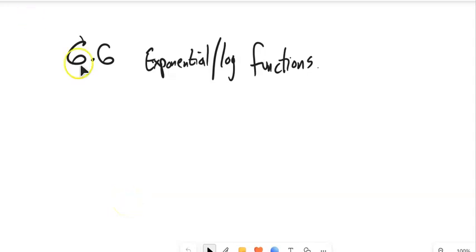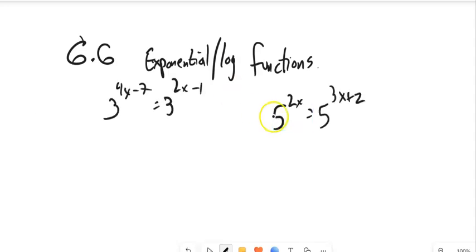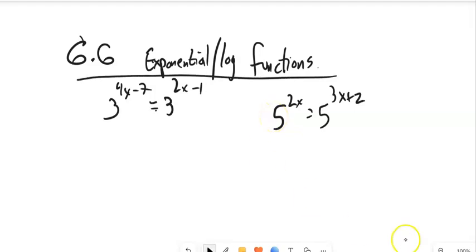In Math 99, section 6.6, we're looking at exponential and log functions — specifically solving them. I have a couple of equations here to solve, and notice they both have an exponential exponent element, like 3 to something equals 3 to something else, or 5 to something equals 5 to something else.